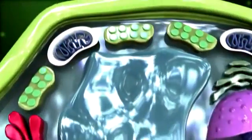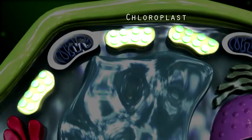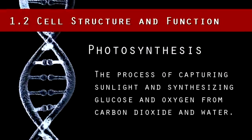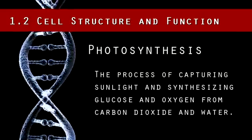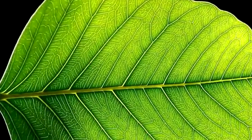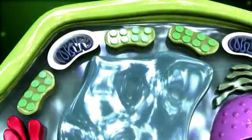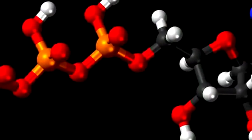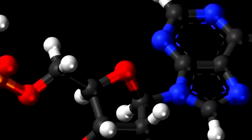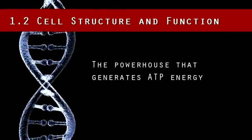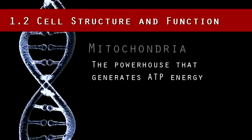The final difference is plant cells have an additional organelle called a chloroplast. The chloroplast is the site of photosynthesis in a plant cell. Photosynthesis is the process of capturing sunlight and synthesizing glucose and oxygen from carbon dioxide and water. Photosynthesis is one of the most important biochemical pathways since nearly all life on Earth depends on photosynthesis as a source of energy. Animals metabolize the glucose from a plant source to produce ATP, the energy currency of the cell. Recall that all organisms need energy to do cellular processes — that's right, it's the mitochondria that generates ATP energy.